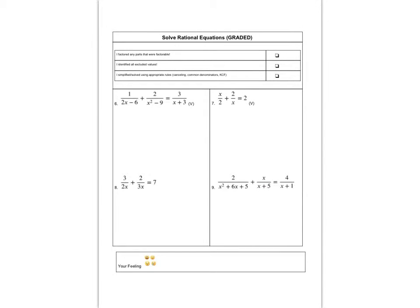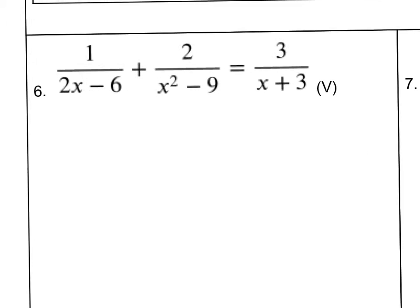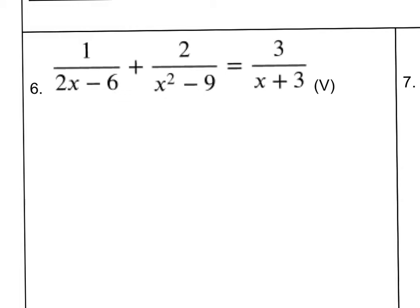For our next part, we've got solving rational equations. There are a lot of similarities with what we just did — we've got to find some factoring and some excluded values. However, these are mostly going to have addition, so we've got to do some common denominators as well. First fraction: I can take a 2 out of the bottom, leaving me with 2 times X minus 3. Second fraction: X squared minus 9, I can factor as X plus 3 and X minus 3.